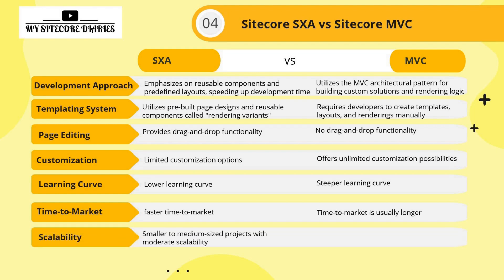Regarding scalability, SXA is best suited for smaller to medium-size projects with moderate scalability needs, whereas MVC can be used for any size of project with full scalability options. This is the difference between SXA and MVC. Whenever you want to choose the correct framework, you can consider these parameters. I have already done a separate video explaining how to choose the right framework between SXA and MVC — you can refer to that.